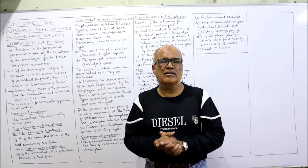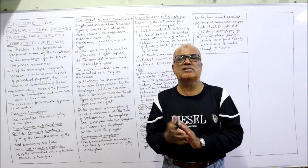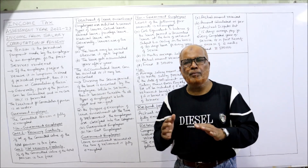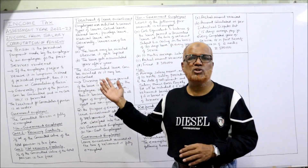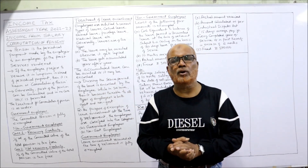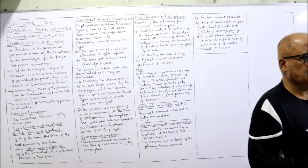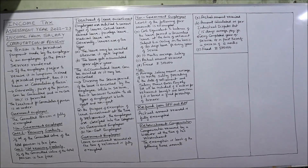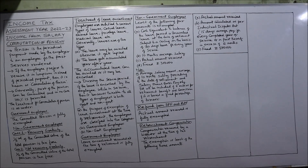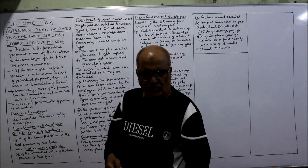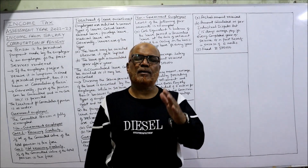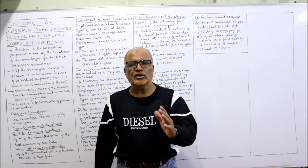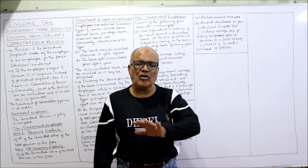A number of problems will come across these points regarding commutation of pension. Take a screenshot of the points I have written on the board, then I'll explain every point in detail. The most important retirement monetary benefits are gratuity, commutation of pension, and leave encashment.